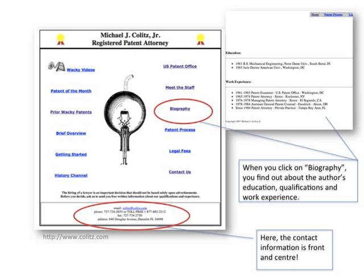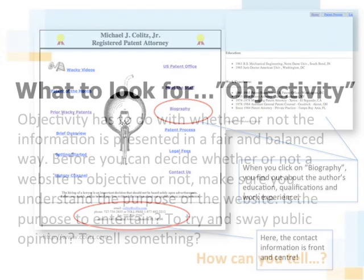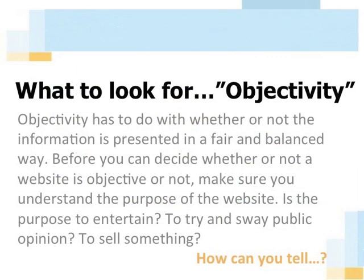Next on the list is objectivity. Objectivity has to do with whether or not the information is presented in a fair and balanced way by offering different points of view. But before you can decide whether or not a website is objective, you need to make sure you understand the purpose of the website. Is the purpose to entertain? To try and sway public opinion? To sell something? For example, do you think Pepsi's website would provide information on the negative aspects of drinking carbonated beverages? Of course not! Therefore, the website has bias.